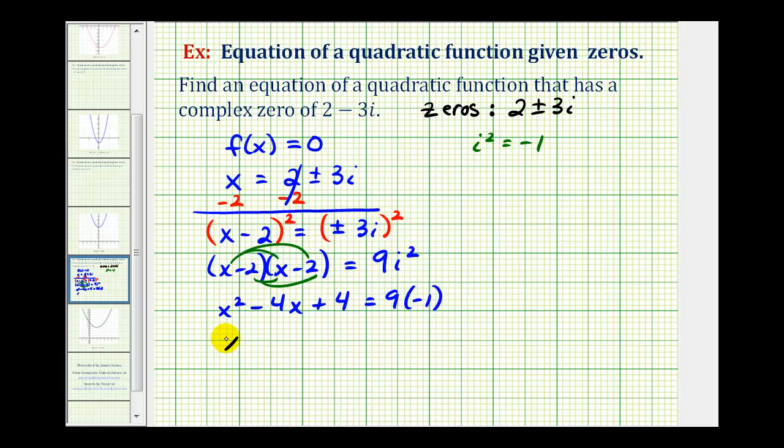So we have x squared minus 4x plus 4 equals negative 9 and now we're going to add 9 to both sides of the equation. This is 0 on the right and we have x squared minus 4x plus 13.